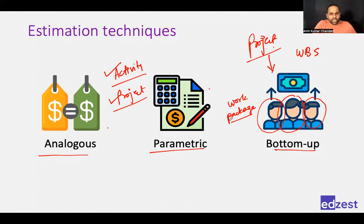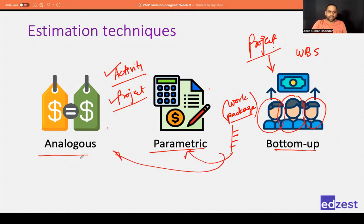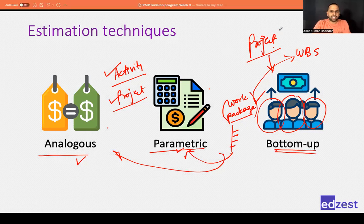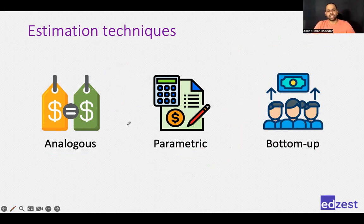Bottom-up estimation is for the project level, not just for one activity. Because you are going to the detail and breaking it down to the work package level, the estimate you get for the project is expected to be accurate. At the activity level within each work package, you can still use parametric or analogous estimating, then add it all up.